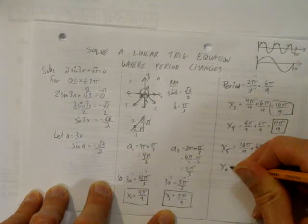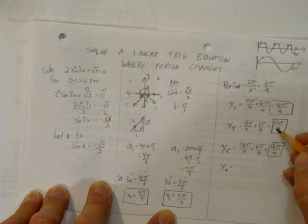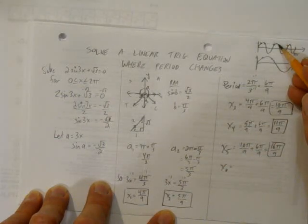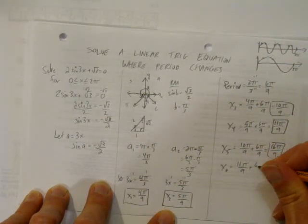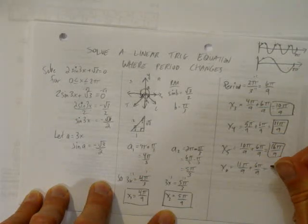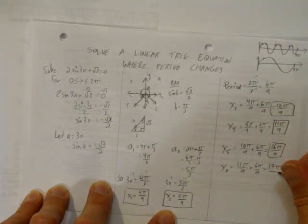And our last one, x6, comes from taking x4, which was 11 pi over 9. That corresponded to here. Add on another period. 11 pi over 9 plus 6 pi over 9 equals 17 pi over 9.